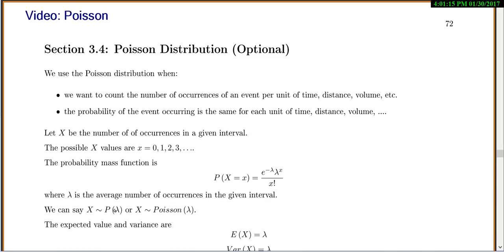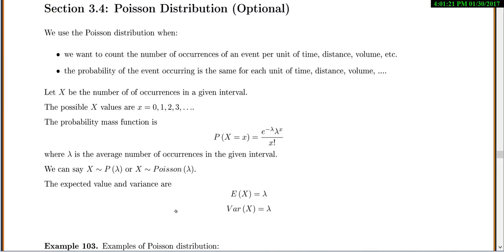And we'll say that X is distributed Poisson(λ), or you need to write out Poisson(λ). The expected value and variance are very easy to remember. Expected value is λ. Variance is λ.